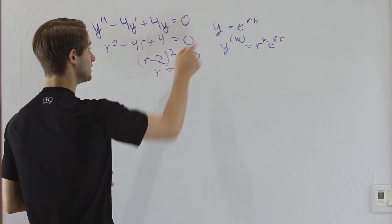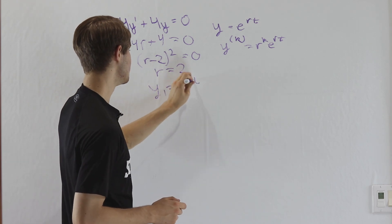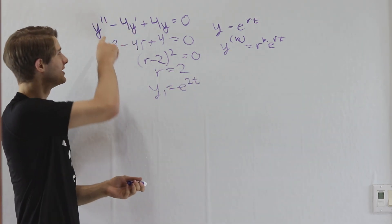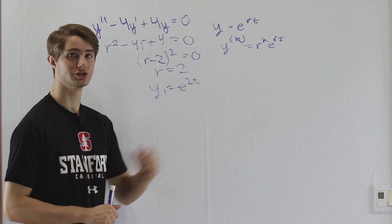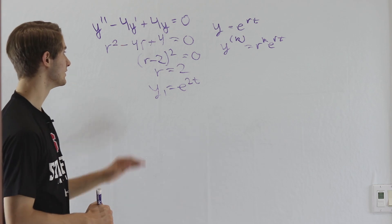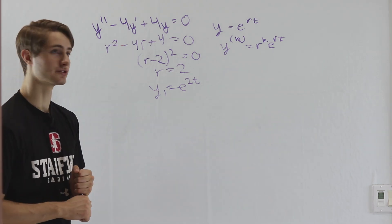So the question is, we know one of our solutions is going to be e to the 2t. But normally, when we have a second order differential equation, we want to have two solutions at the end. So where did the second one go? In this case, it seems like we don't really have any way to get to a second solution.